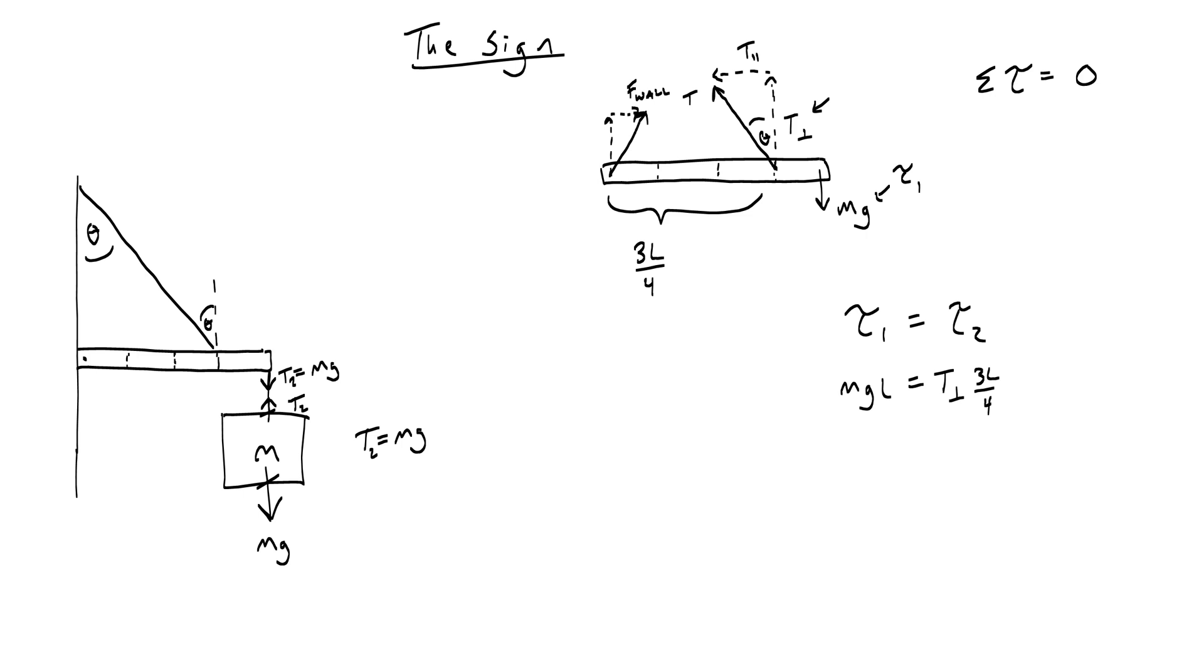Let's talk about what T perpendicular is. Since it is adjacent to the angle, we're actually going to call this T cosine theta. So when we write this, we'll get T cosine theta 3L over 4 equals mg L.